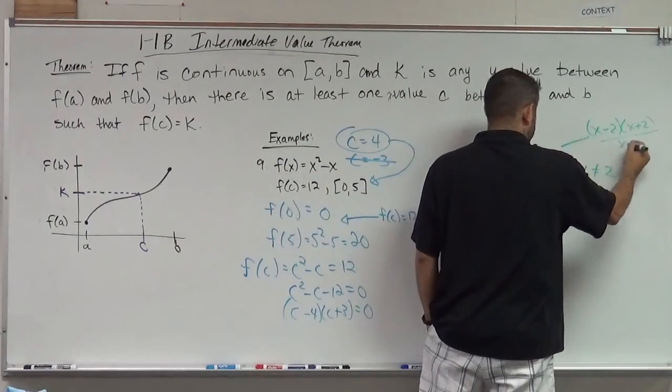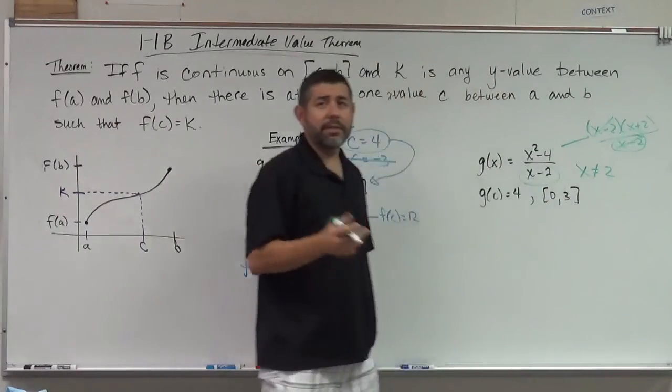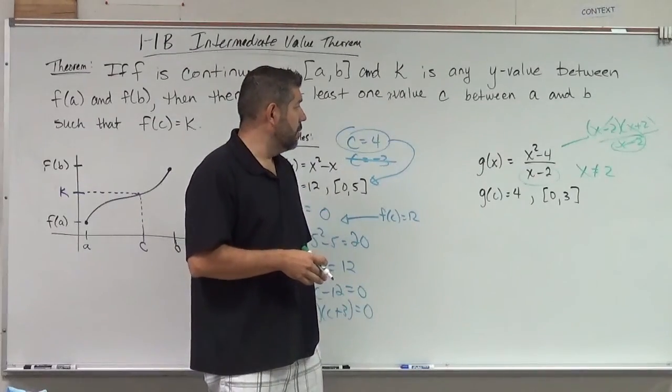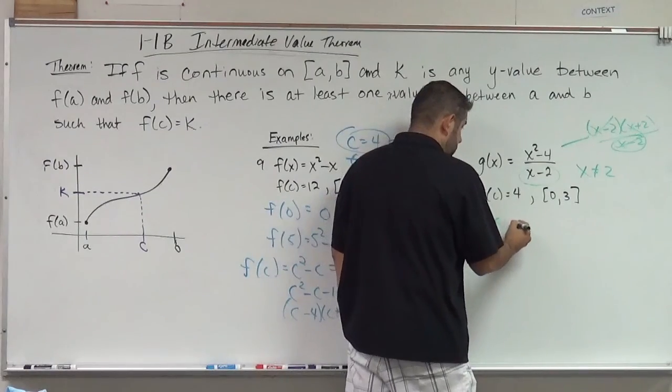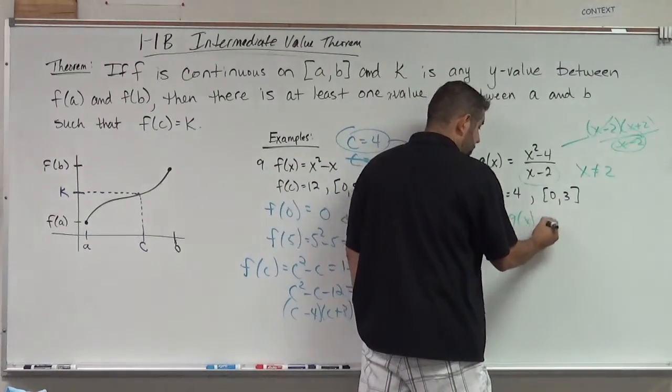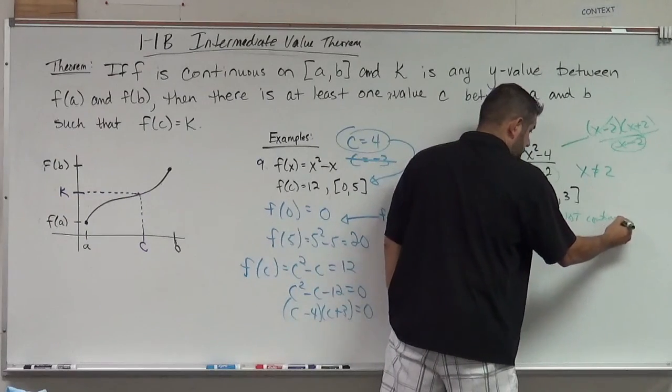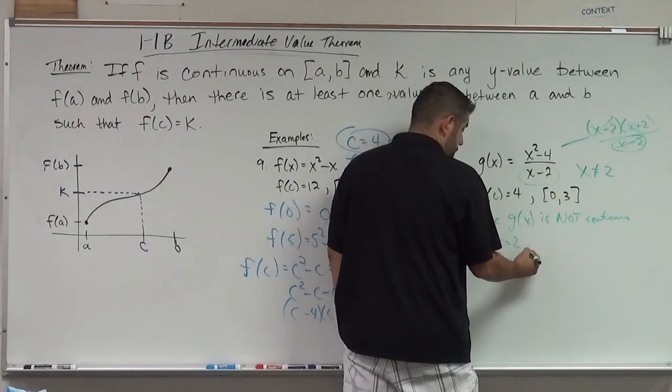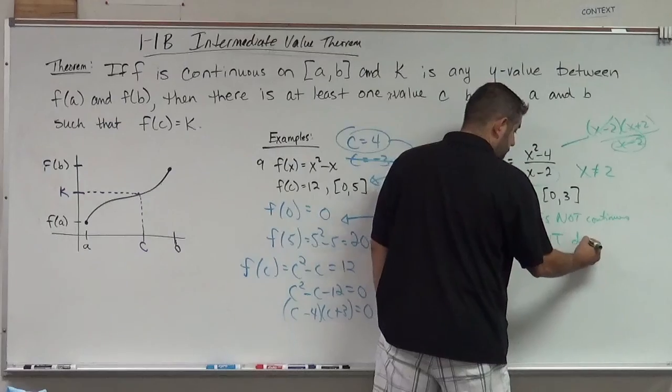we're going to get still a hole in the graph. Because that's what happens when you factor that out and simplify. So since g(x) is not continuous at x equals 2, the intermediate value theorem does not hold.